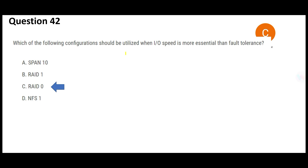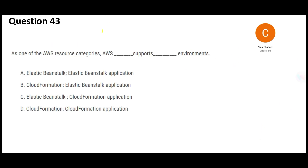So the thumb rule: if you want high performance, use RAID 0. In the exam, you may be given a one-paragraph use case that essentially means 'I want high performance' — you should select the option with RAID 0. The options may be long sentences, but just look for RAID 0 and select it. The answer is RAID 0 for high performance.